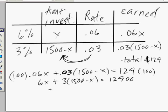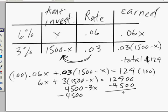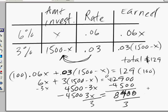And so we can go ahead and multiply this. This is 4500 minus 3x. We'll subtract 4500 from this side and subtract 4500 from this side, giving us 8,400 on that side. And we get 3x equals 8,400. So we're going to divide both sides by 3.